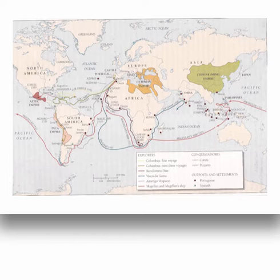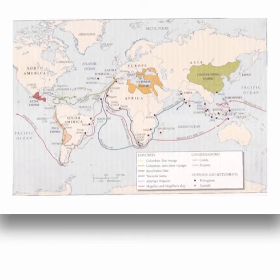The Spanish, next-door neighbors to the Portuguese, were watching all of this with a lot of jealousy and really wanted to get in on the spice trade as well. But the Portuguese seemed to have already taken over the eastern route to the Spice Islands. In 1492, an Italian navigator named Cristobal Colon — better known as Christopher Columbus — went to the King and Queen of Spain, Ferdinand and Isabella, with a proposition.